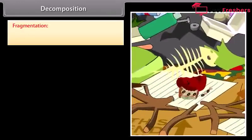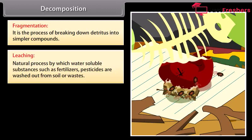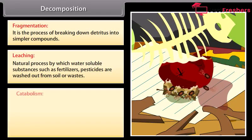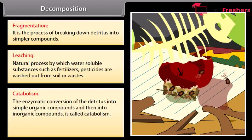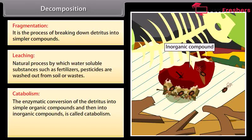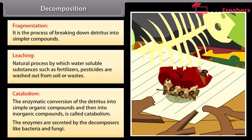Fragmentation: it is the process of breaking down detritus into simpler compounds. Leaching: natural process by which water-soluble substances such as fertilizers and pesticides are washed out from soil or wastes. Catabolism: the enzymatic conversion of the detritus into simple organic compounds and then into inorganic compounds is called catabolism. The enzymes are secreted by the decomposers like bacteria and fungi.